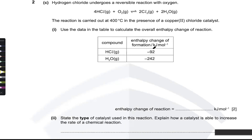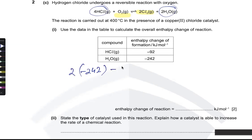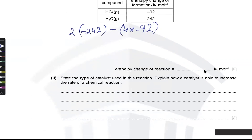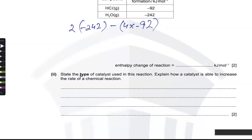For the enthalpy of formation calculation, we use the overall enthalpy of reaction. Formation enthalpies of chlorine and oxygen are zero — they are elements — so only the relevant compounds remain. We have two moles of water and four moles of HCl, so: 2 × (−242) minus [0 + 4 × (−92)], giving a simple value.